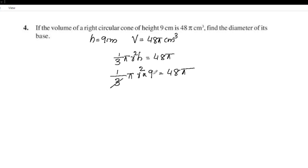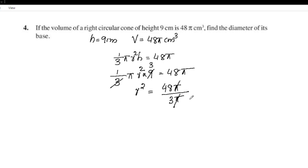Simplifying: 3r² = 48π divided by π, giving r² = 48 ÷ 3 = 16. Therefore r² = 16, so r = 4 cm.